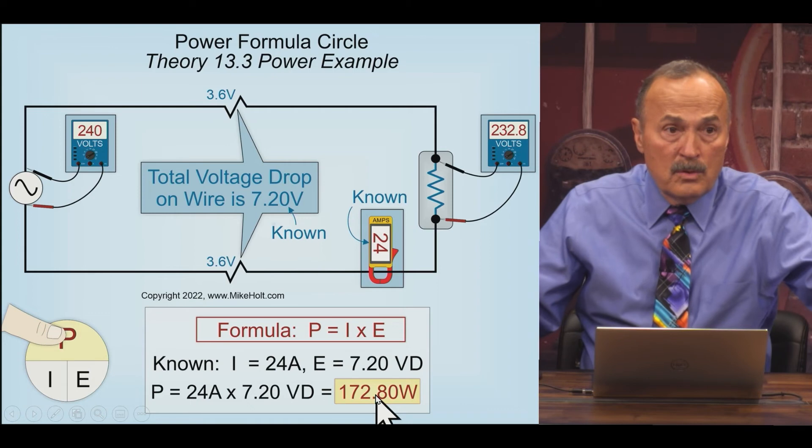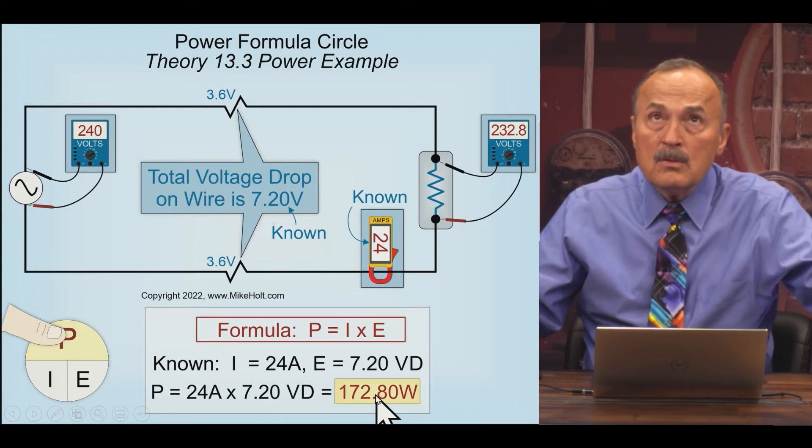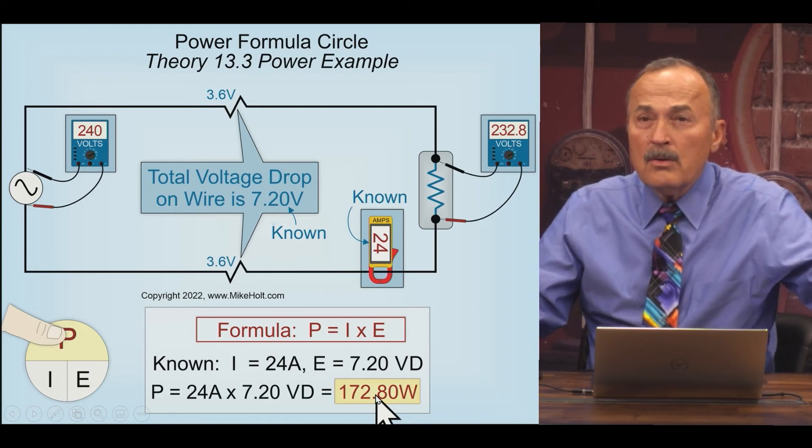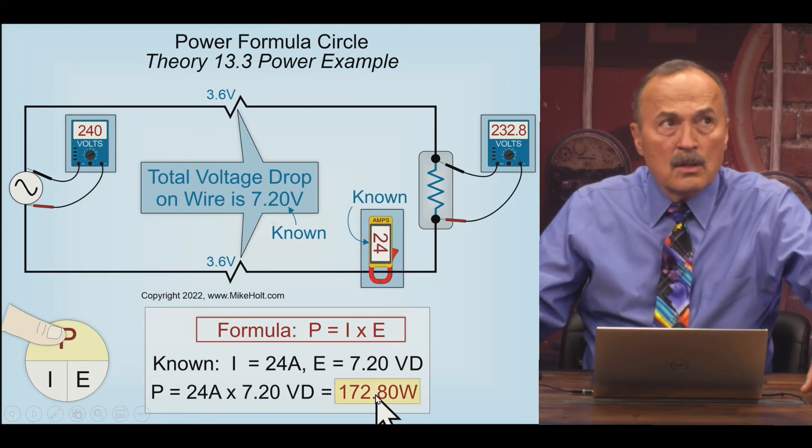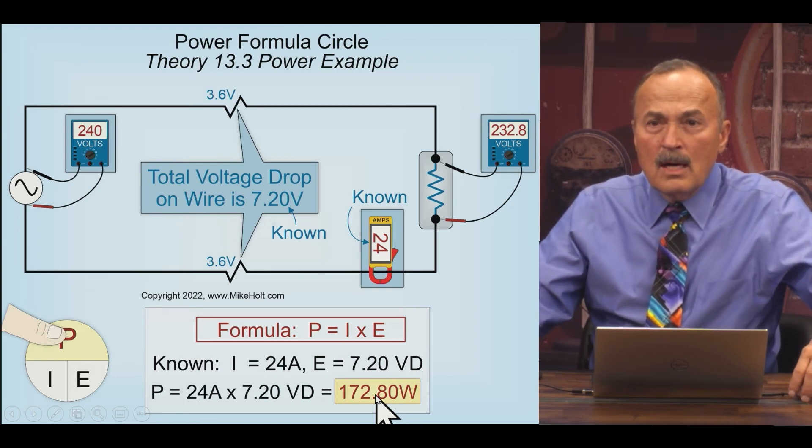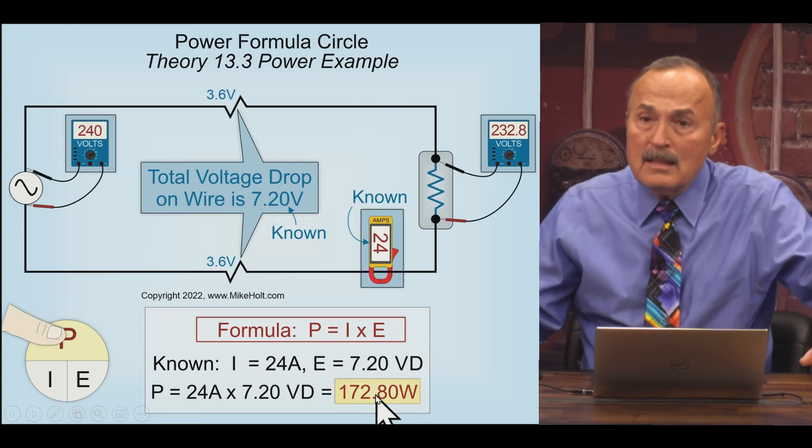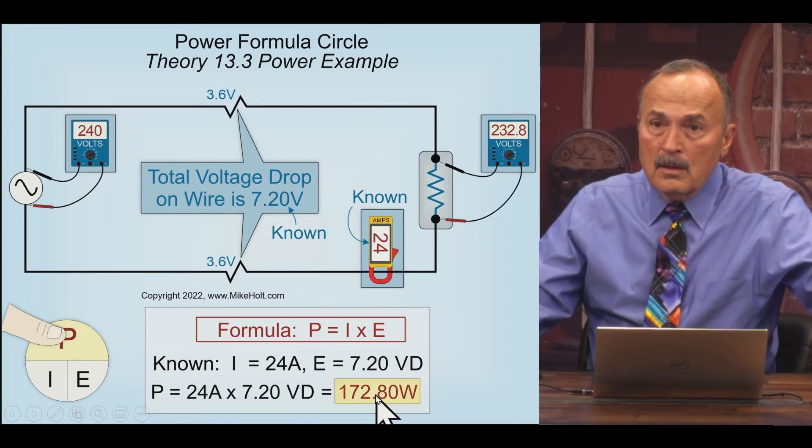And now you do that times 10 hours, that's, what's 172? 1,700 watts. So 1.7 kilowatts. 1,700 watts is 1.7. Basically, you can round it off to 2 kilowatts. Yep, a quarter, about 25 cents.